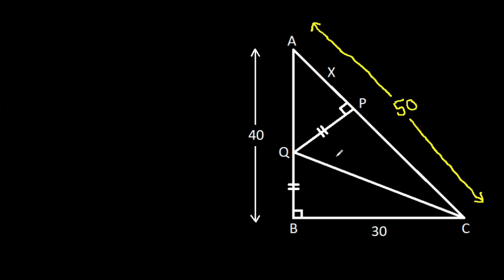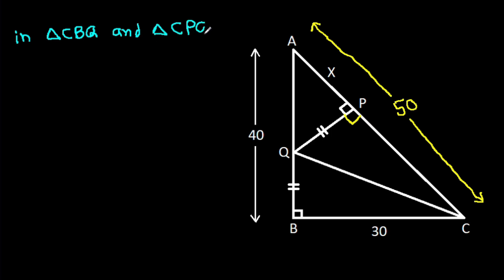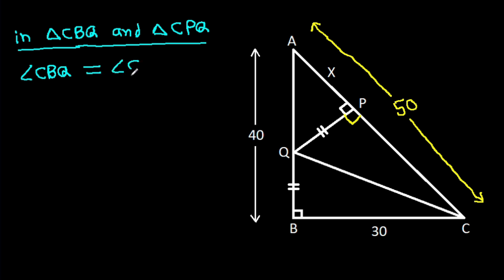Now, this angle is 90 degrees. So, in triangle CBQ and triangle CPQ: angle CBQ is equal to angle CPQ, that is 90 degrees.